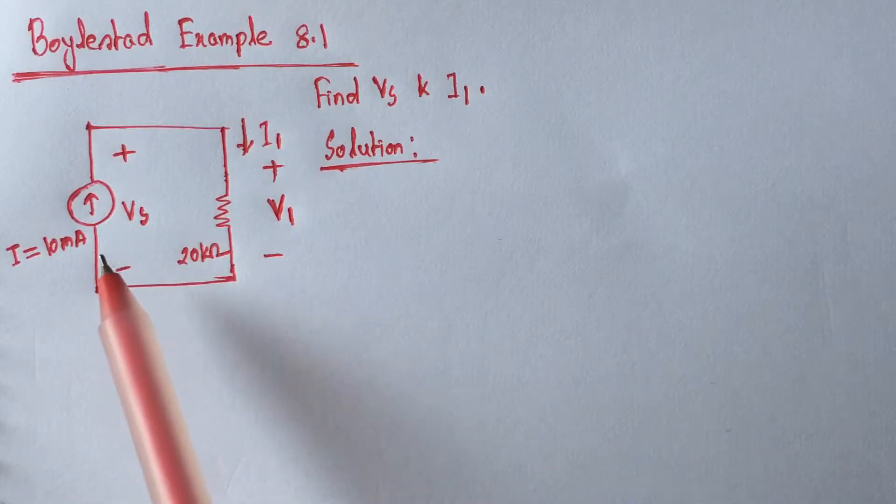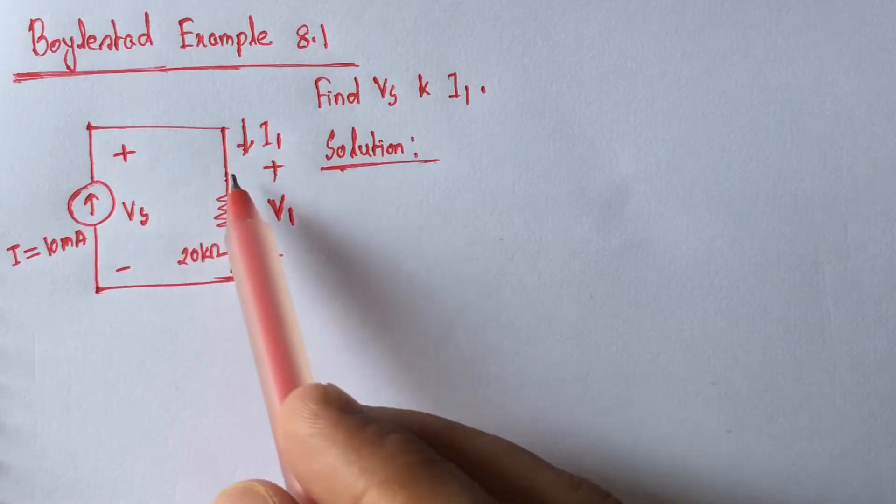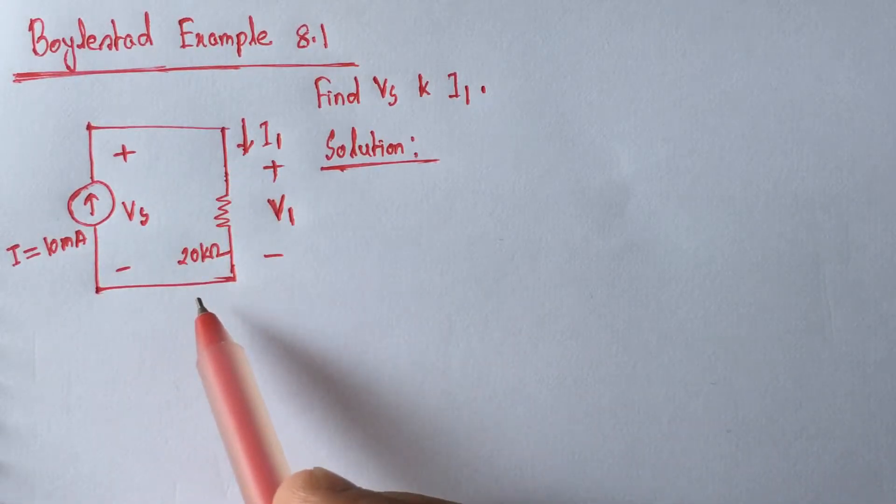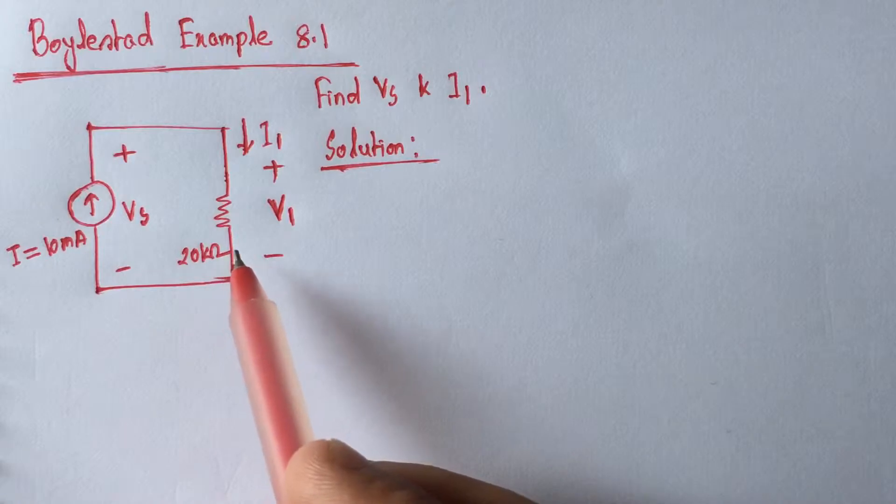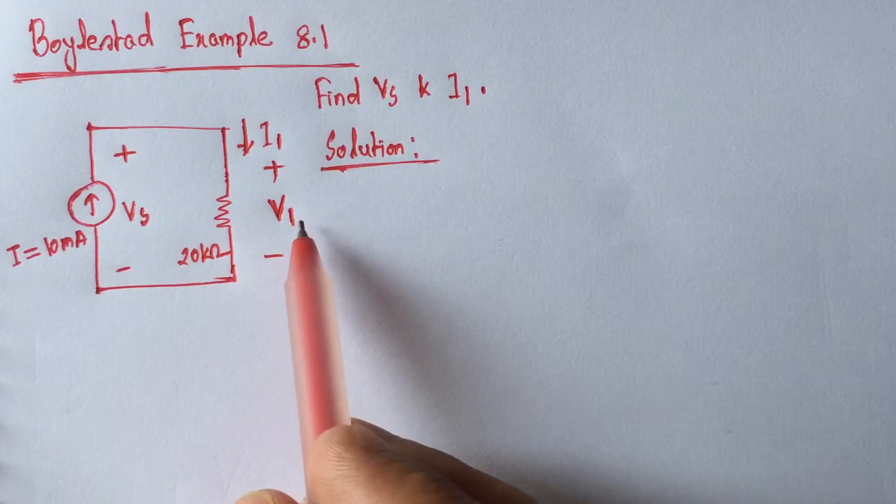From the circuit we see that the 10 mA current source is flowing through the 20 kohm resistance, so we can identify the voltage V1 easily by using Ohm's law.